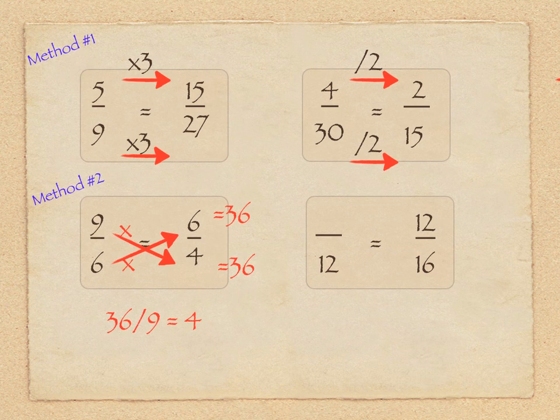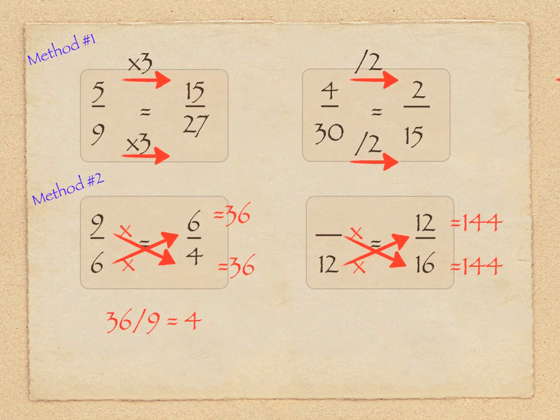Finally, the last one on the bottom right, we see a proportion of blank over twelve is equivalent to twelve over sixteen. We're going to do that same method again. This time we'll multiply twelve times twelve which is one forty four. So whatever this blank on top times sixteen is turns out to be one forty four. One forty four divided by sixteen is nine, gives us that missing value of nine.